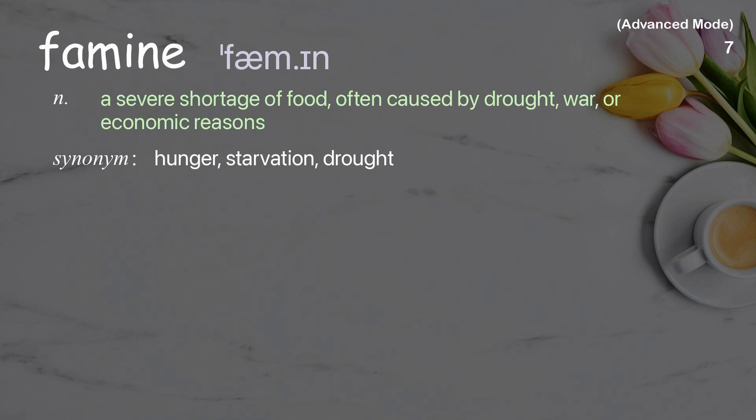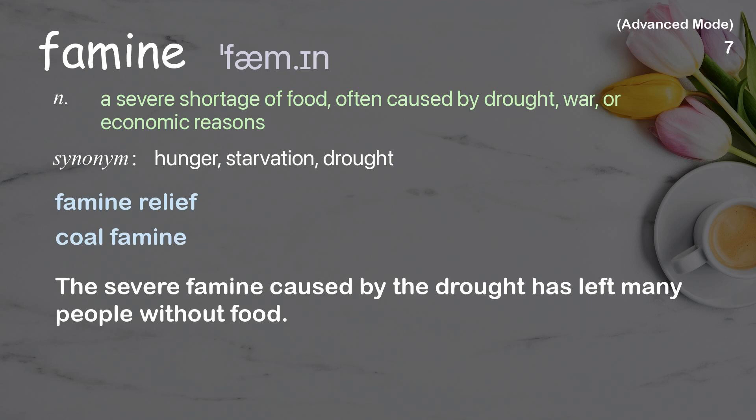Famine: a severe shortage of food, often caused by drought, war, or economic reasons. Examples: famine relief, coal famine. The severe famine caused by the drought has left many people without food.